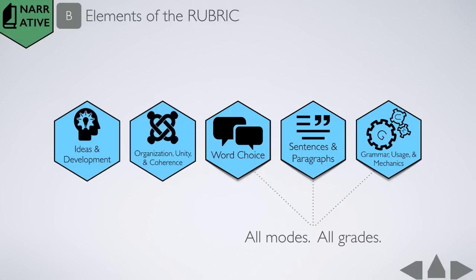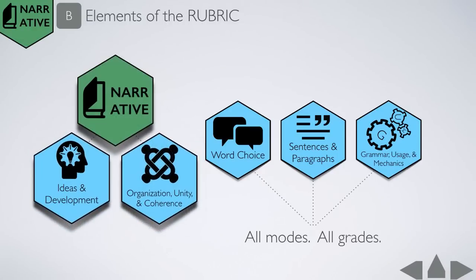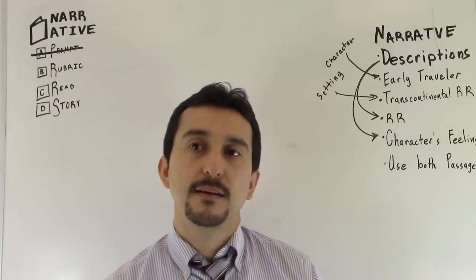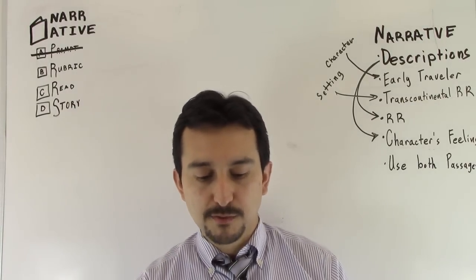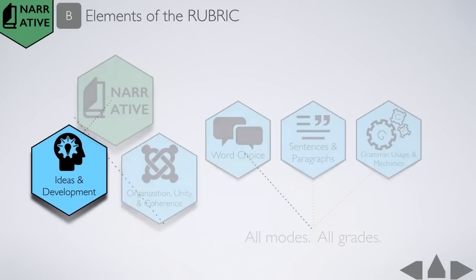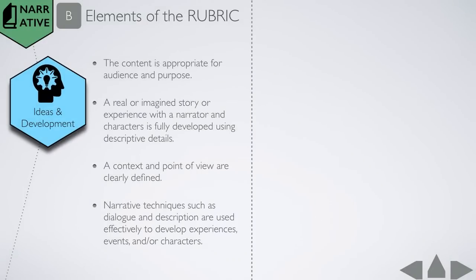Because they are the same for both grade levels and for all three writing modes that can be assessed, we're going to focus just on ideas and development and organization unity and coherence in order to break it up and make it more manageable, more digestible. Now the first thing you're going to want to do with your department, you're going to look at the rubric, what it says for ideas and development, and make sure you have a clear understanding of what is being assessed.